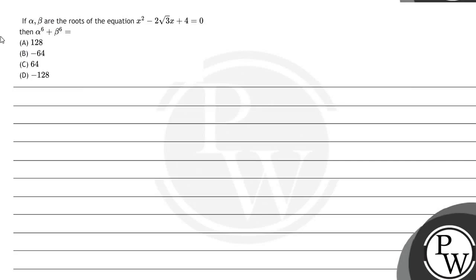Hello Bacho, let's see this question. The question says if alpha, beta are the roots of the equation x² - 2√3x + 4 = 0, then α⁶ + β⁶ is equal to: option A 128, option B -64, option C 64, option D -128.